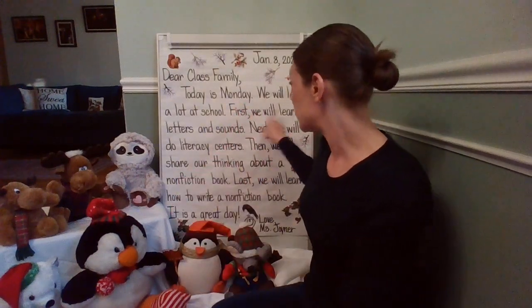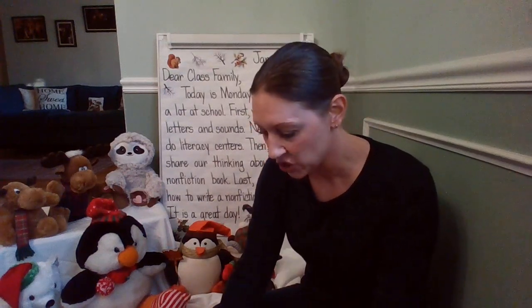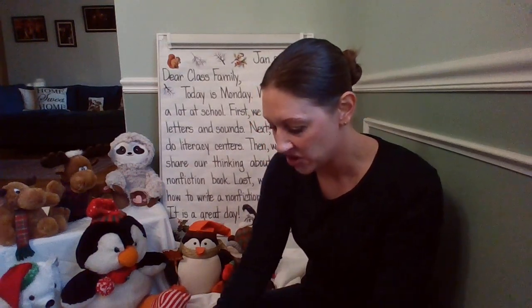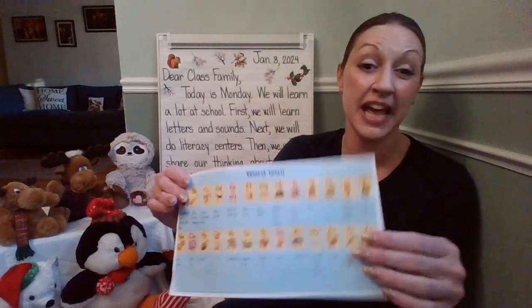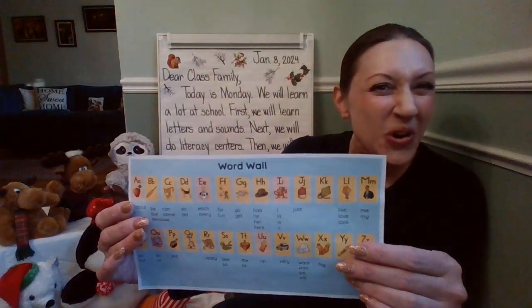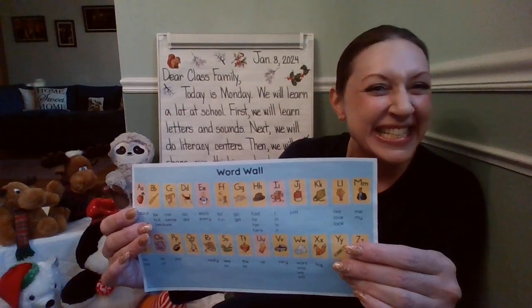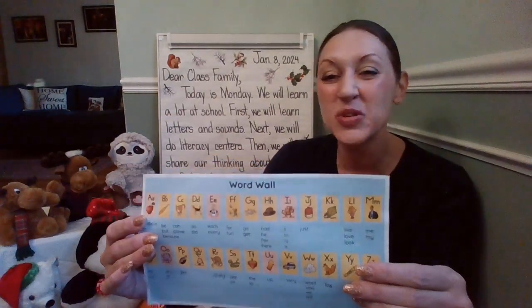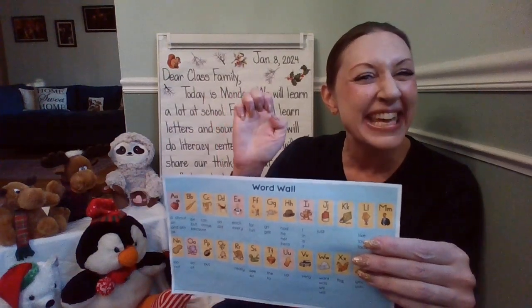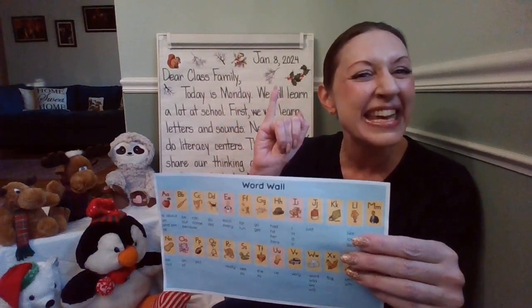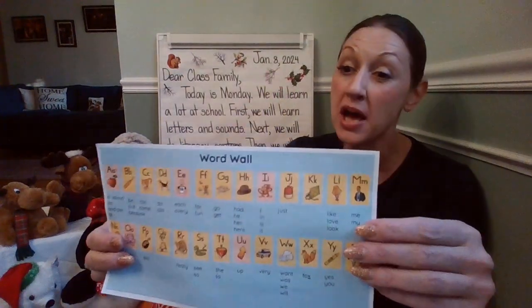First, we'll learn letters and sounds just like we do every day in kindergarten. We'll use many resources to learn letters and sounds, including our word wall with the foundations cards. Review the vowels with me — remember, vowels have red in the background. A, apple, ah. E, ed, eh. I, itch, i. O, octopus, ah. And U, up, ah.